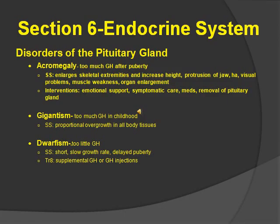Here we talk about the disorders of the pituitary gland. First, we're going to start off with acromegaly. This is too much growth hormone after puberty. Signs and symptoms are going to be enlarged skeletal extremities, increased height, protrusion of the jaw, headache, visual problems, muscle weakness, and organ enlargement — so the heart's going to be enlarged, the whole body's going to be affected.